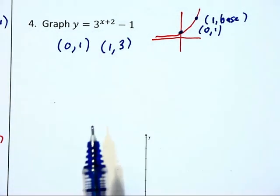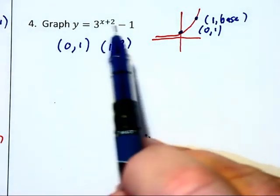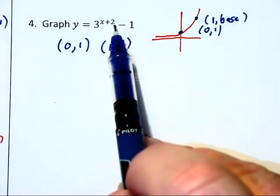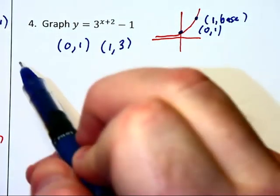However, that's before the shifting. I have x plus 2, or x minus h, which tells us h is negative 2 and we're going to be shifting this left 2.